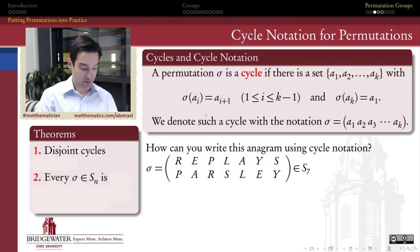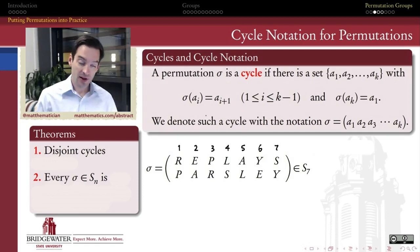Let's analyze another example. So here's a set of seven elements, the letters in the word REPLAYS. How could I write that anagram that turns REPLAYS into PARSLY using cycle notation? This is going to be an element of S7, the symmetric group on seven symbols. So first, I'll number all of the elements in my set, 1 through 7, because that's traditionally in cycle notation. We use numbers to represent the positions.